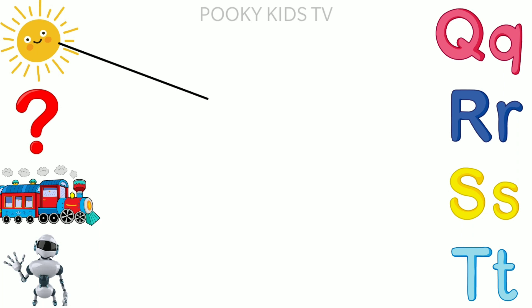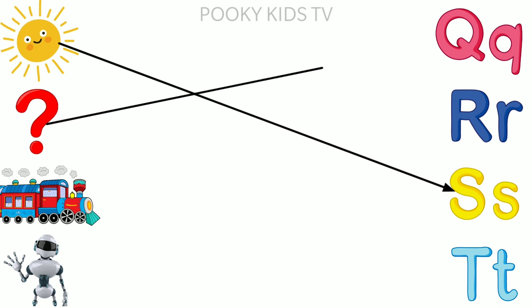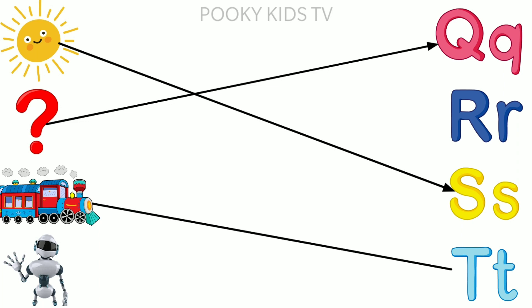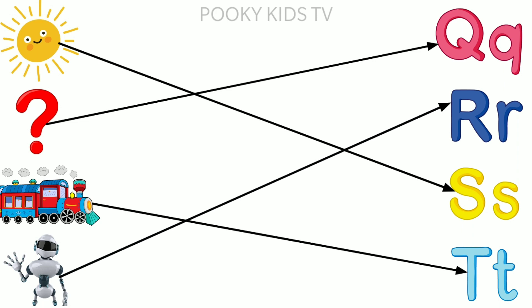S for Sun. Q for Question Mark. T for Train. R for Robot.